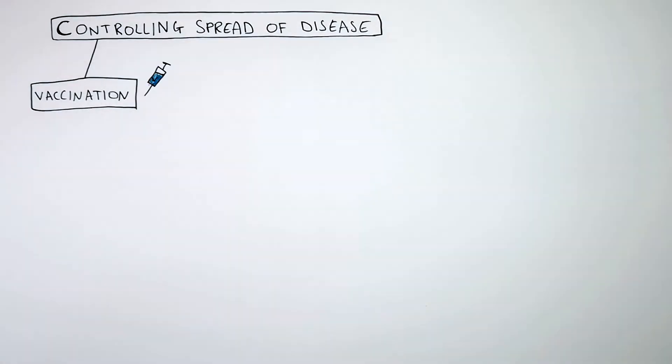The first method we're going to talk about is vaccination, where you vaccinate entire populations to make the whole population immune to a disease.